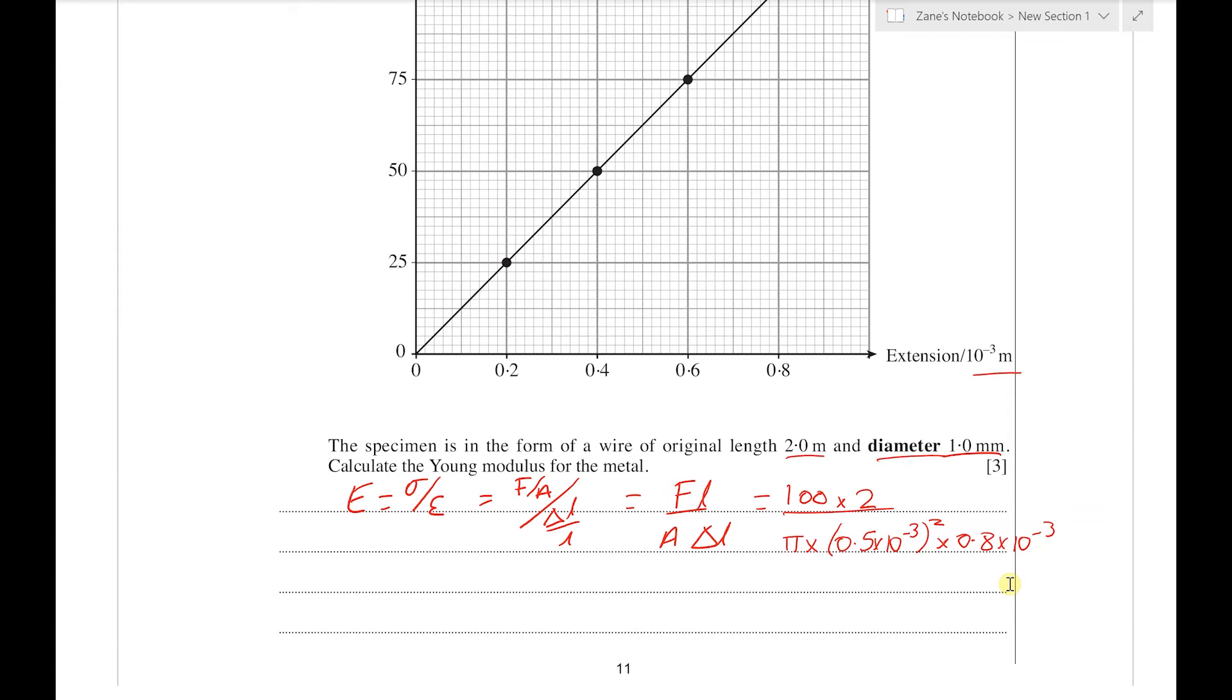200 to 300 gigapascals, then you're doing something very slightly wrong somewhere, probably just forgetting a multiplying factor. When we put those values into the calculator, we end up with an answer of 318 gigapascals, or if you prefer, just in normal standard form, 3.18 times 10 to the 11. So that's a big hint that we've probably done this question correctly.